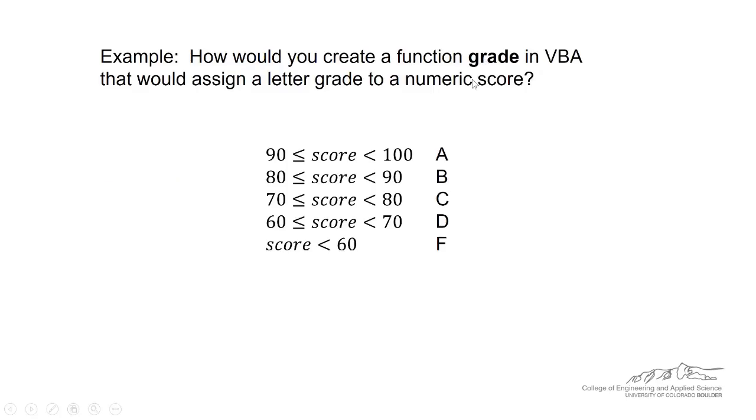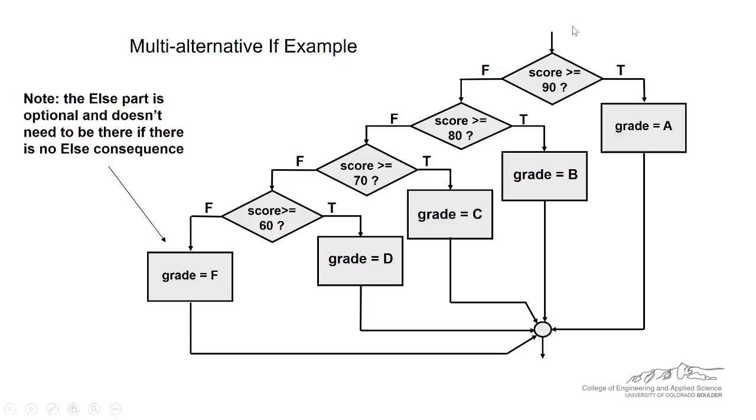How would you create a function grade in VBA that would assign a letter grade to a numeric score? A for a score between 90 and 100, and B, C, and D. And if nothing else, if the score is neither of these first four options, then the student has earned an F. The flowchart for this is shown in this slide.